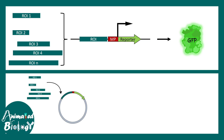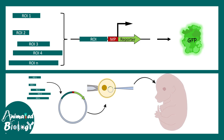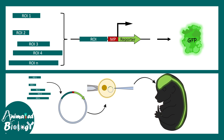One can also clone the construct into a transposon-based vector and inject it into a developing mouse embryo. Different mouse lines are generated, and wherever the gene is expressed, that particular region is highlighted via fluorescence. This is how one can understand where the enhancer is active — in this case, activation was observed in the brain and spinal cord. This was the classical enhancer trap experiment, leading to the discovery of many important enhancers in development and cell biology.